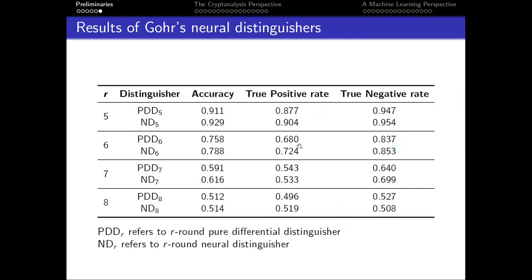These are the results of Gohr's pure differential distinguisher (PDD) and neural distinguisher (ND). You can see that for each round, the NDs are actually performing better than the PDDs.